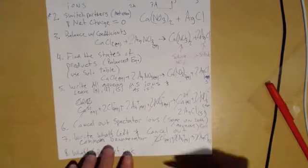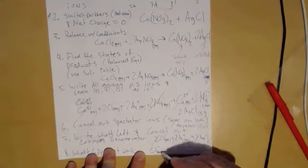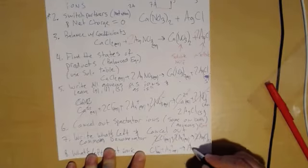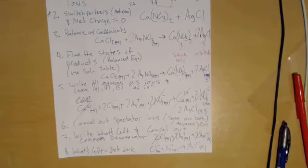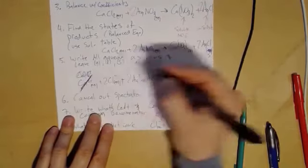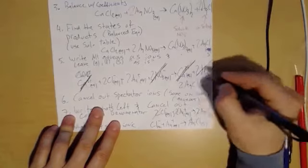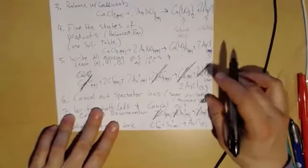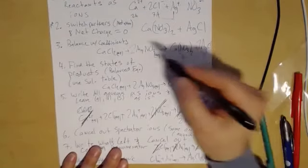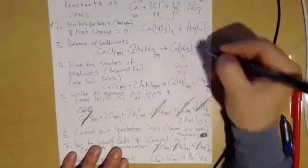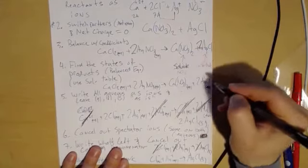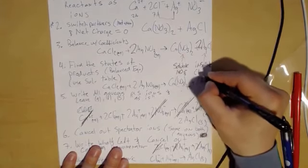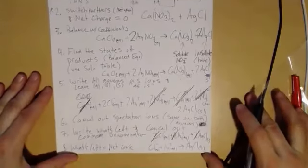And so that would be Cl- aqueous plus Ag+ aqueous goes to AgCl solid. And that's kind of the final deal. Okay. Let's make it black. Okay. All right. And I guess the only other reds I have was this two here. And this one's soluble because of NO3-. And this one's insoluble. Let's just say from the table. Okay. Is that easier to see?